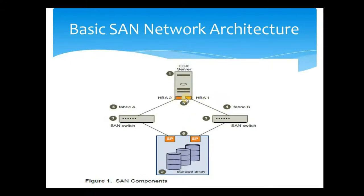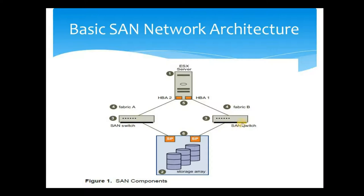If one HBA fails, the other HBA supports the SAN operations, and if an entire switch fails, the other switch takes over the traffic. The storage array is connected to both switches. The storage array has two storage processors — one SP connected to Fabric B and one SP connected to Fabric A. So in each layer of the SAN network there is redundancy: in the host layer via HBAs, in the fabric layer via switches, and in the storage layer via storage processors.